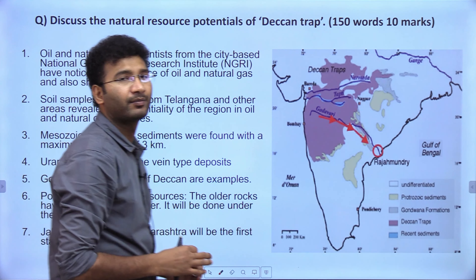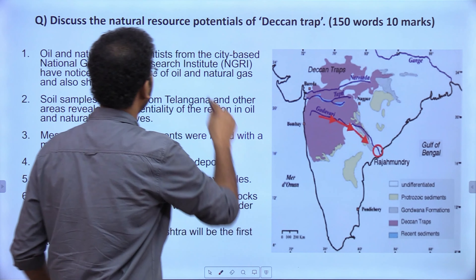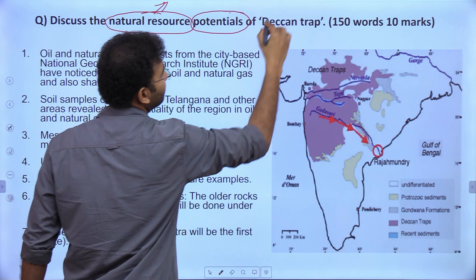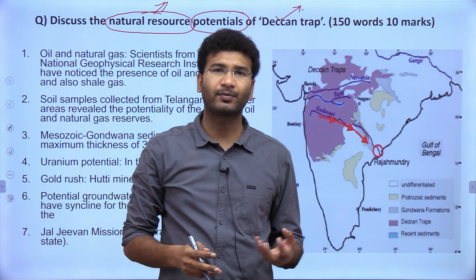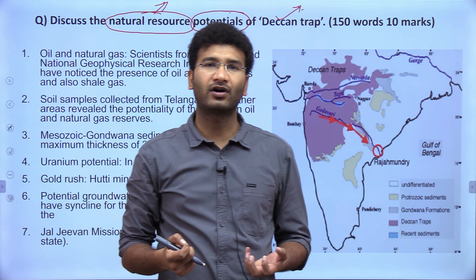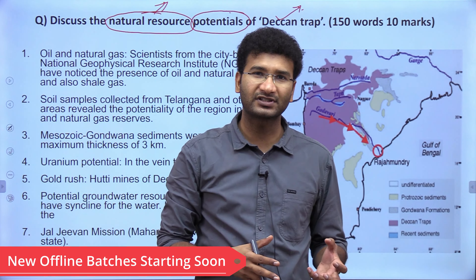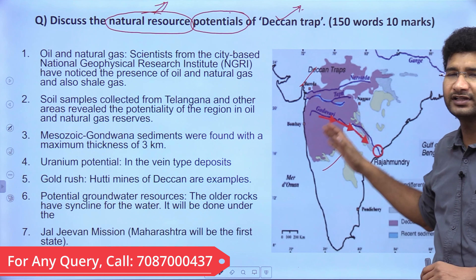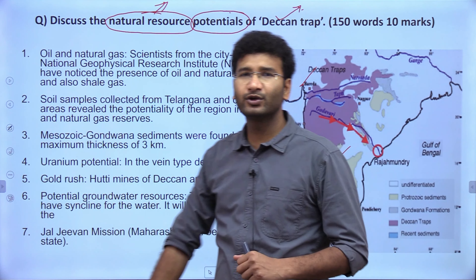The next question: 'Discuss the natural resource potential of the Deccan Trap' — 150 words, 10 marks. It asks about potential, not just what resources exist. In the introduction, mention that Deccan Trap formations are primarily extrusive igneous rocks that cooled over millions of years. These primary rocks extend all the way from Gujarat to the northern part of Karnataka, including parts of Telangana and Maharashtra.